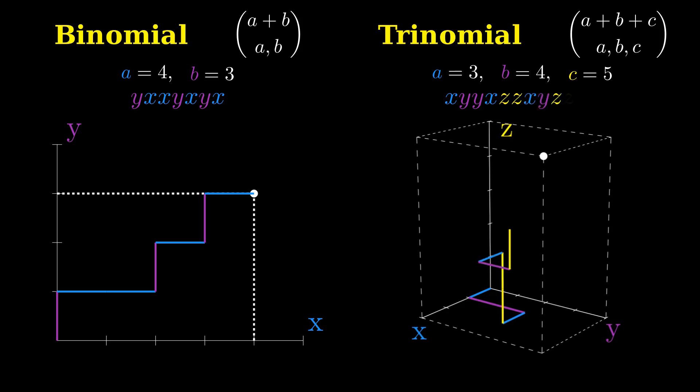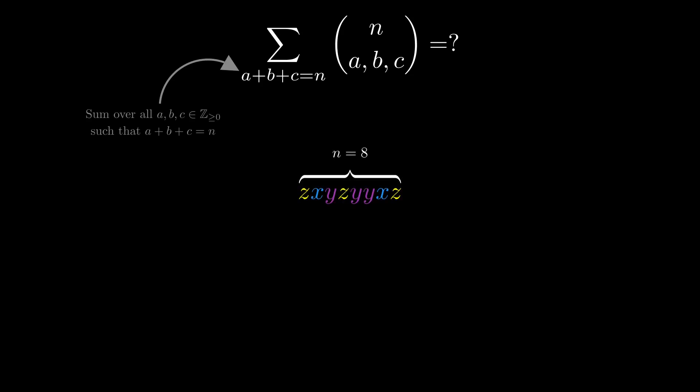Let's play around with trinomial coefficients to make sure we understand them. What's the sum of n choose (a, b, c) where we let the sum go over any possible non-negative values of a, b, and c that sum to n. These are the paths with n steps, but we don't care where we end up, as long as we took n steps in the x, y, and z directions. So the first step could be x or y or z, three choices. The second step could be x or y or z again, three choices. And it's three choices for each of the n steps. So this sum is 3^n.